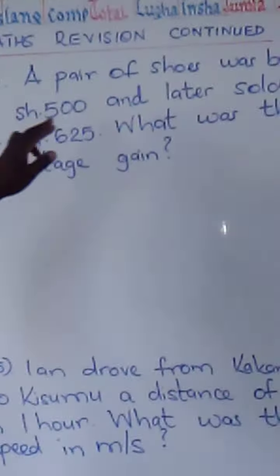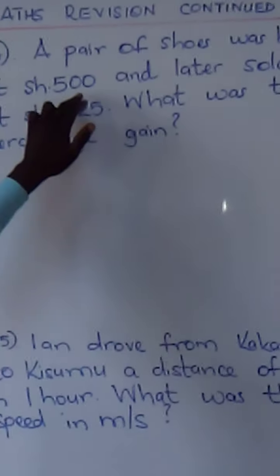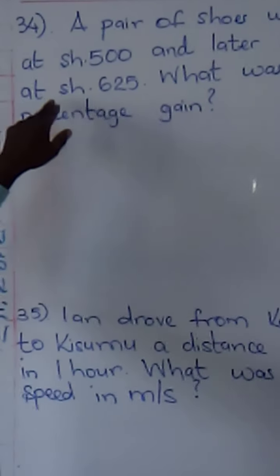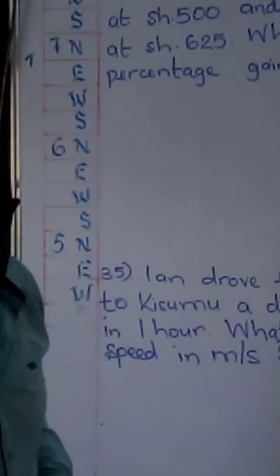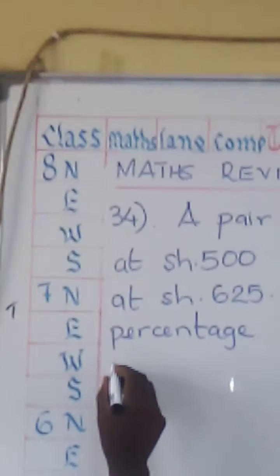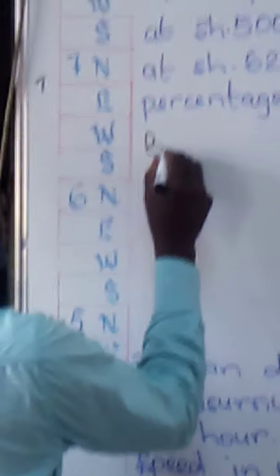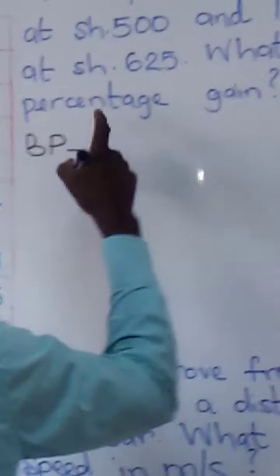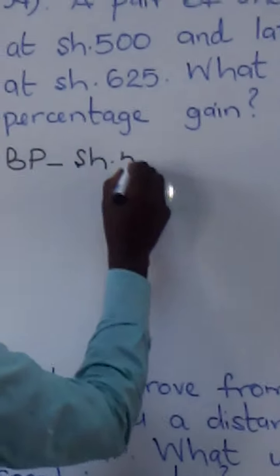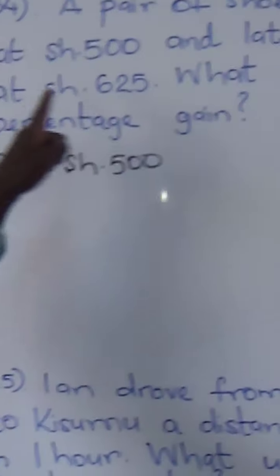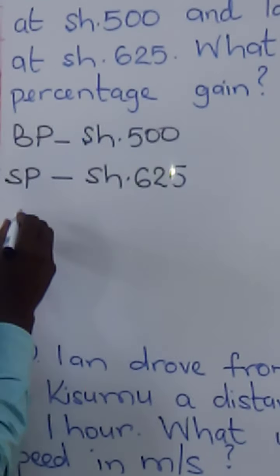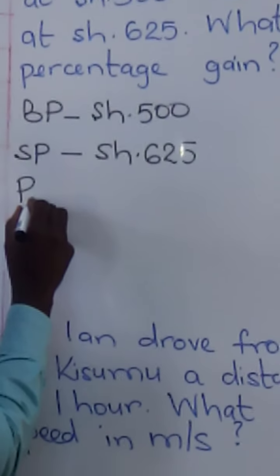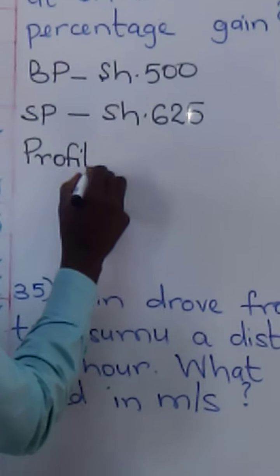Question number 34 says: a pair of shoes was bought at 500 shillings — that's the buying price — and later sold at 625 shillings. What was the percentage gain? Percentage gain, or percentage profit? The gain is called the profit. We need to find the percentage profit.